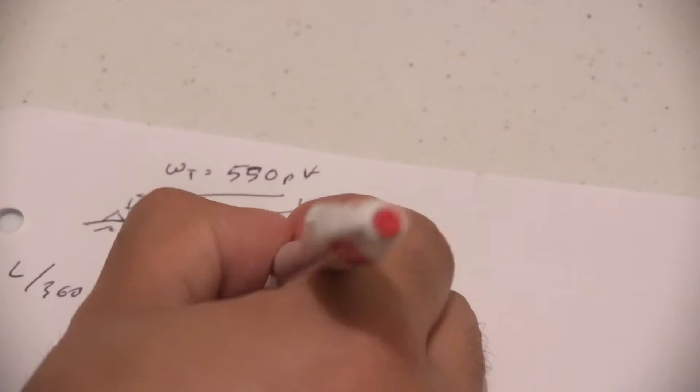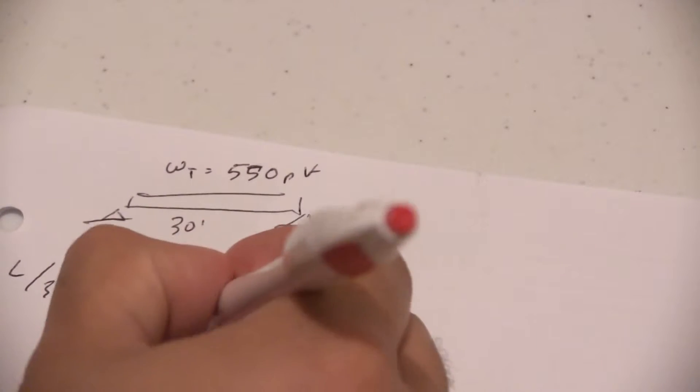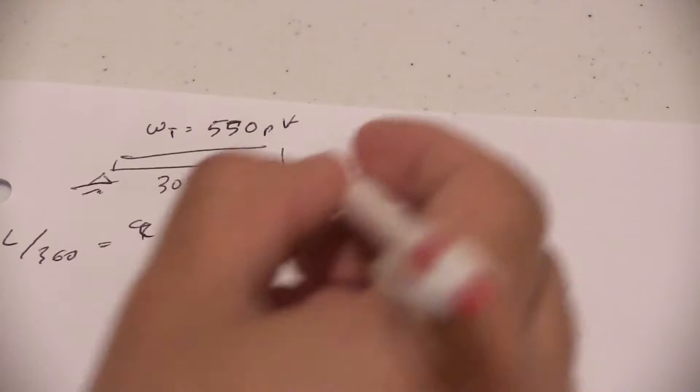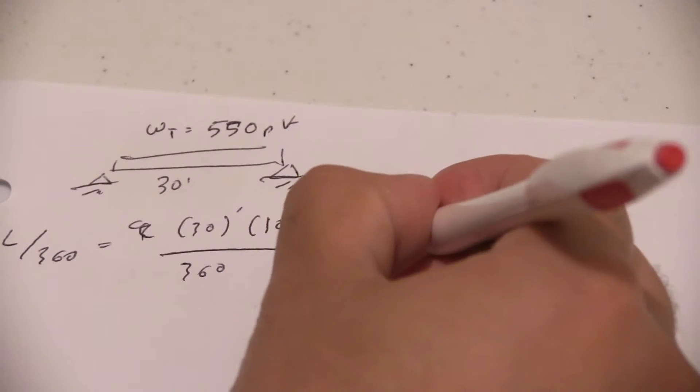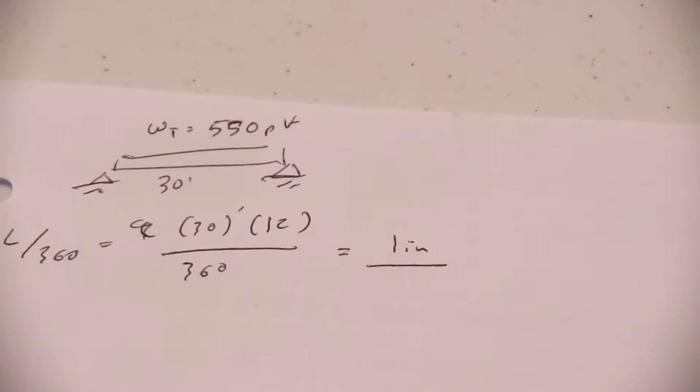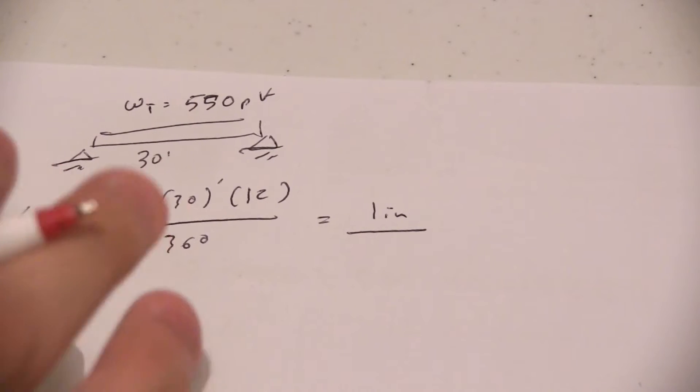30 feet times 12 to convert it into inches over 360, and this is going to give you a maximum allowable deflection of 1 inch, so our deflection cannot go beyond that.